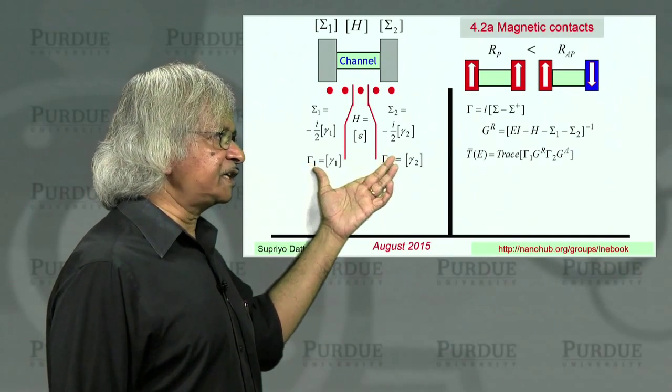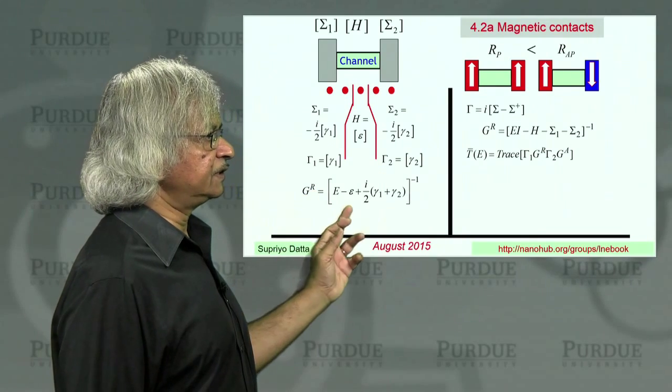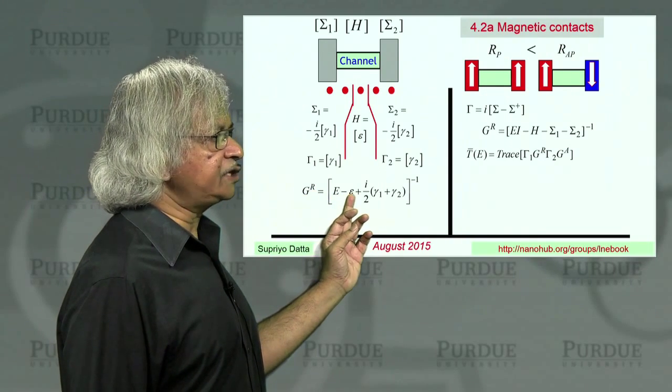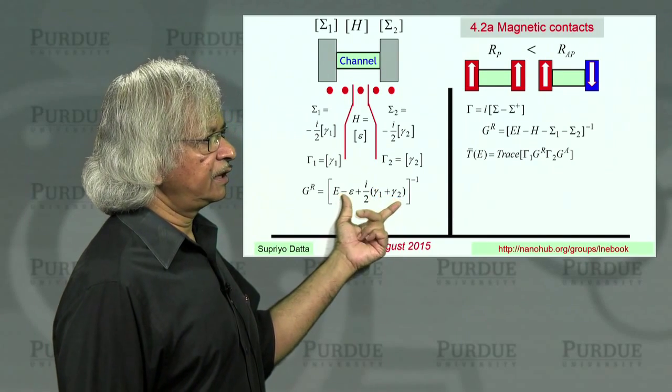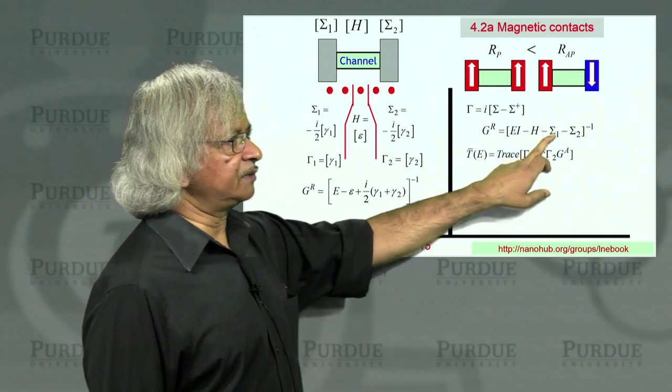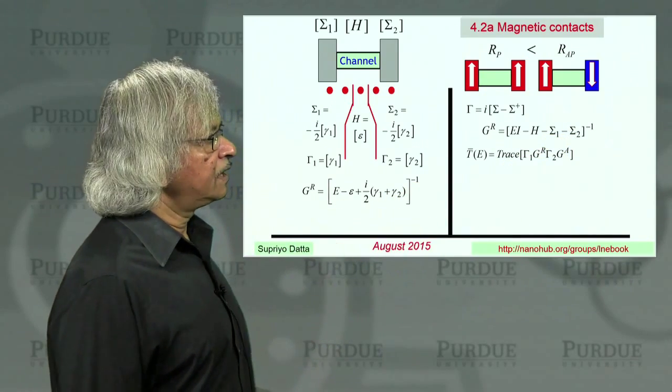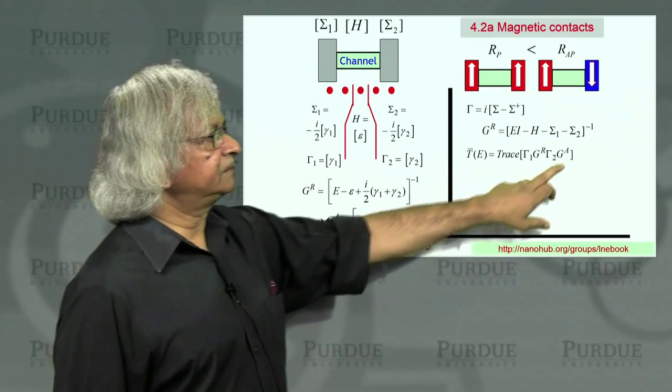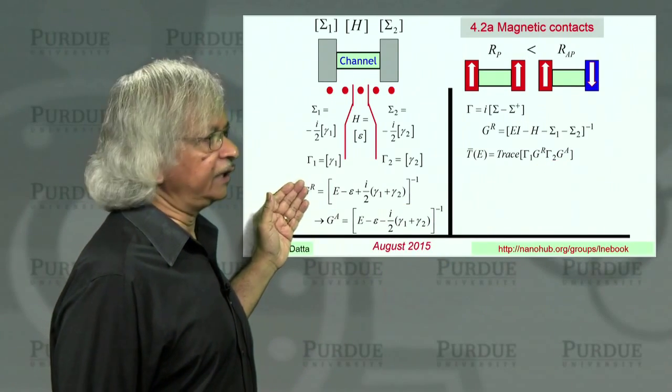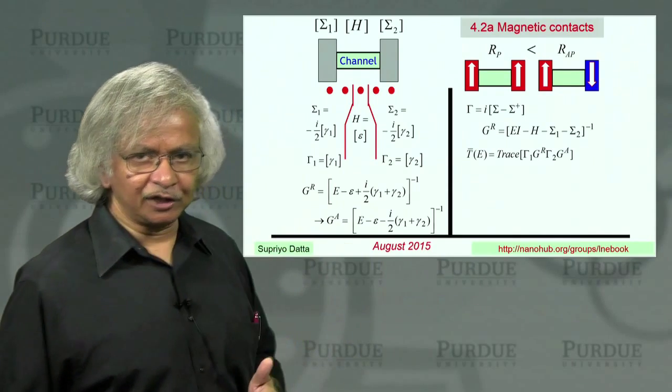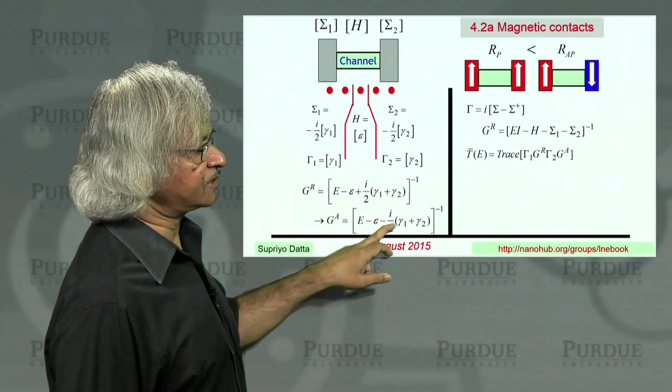Anyway, so for this gamma, the corresponding sigma looks like this. And you're not worrying about any real part of sigma. Similarly, for this gamma, you have that one. And given this h and sigma, you can write down the retarded Green's function. This is e. That's h. Next one is sigma 1. Next one is sigma 2. So this is e minus h, minus sigma 1, minus sigma 2, and then inverse.